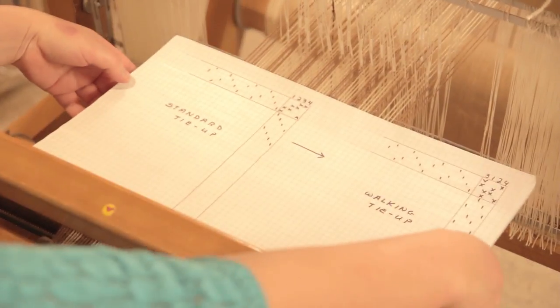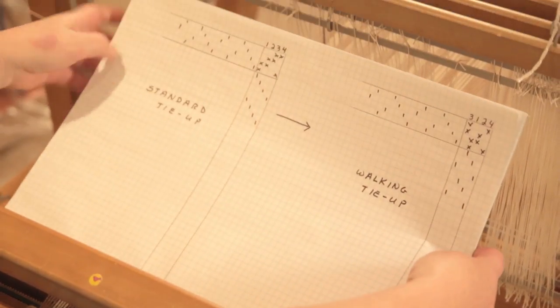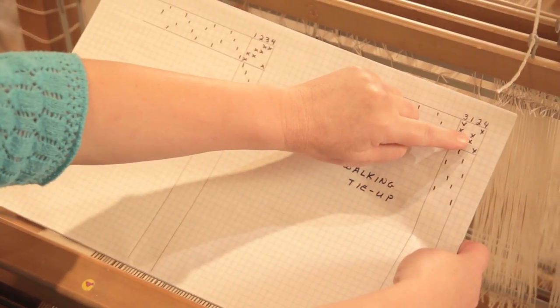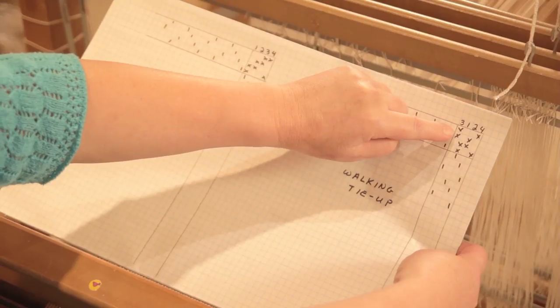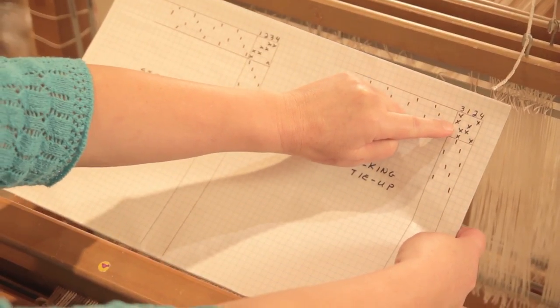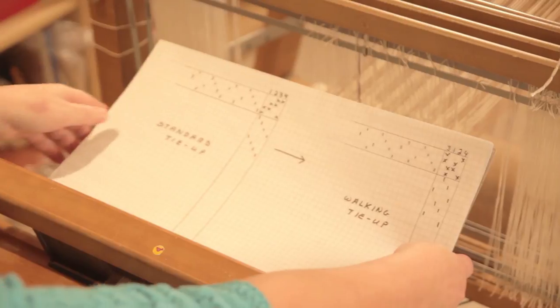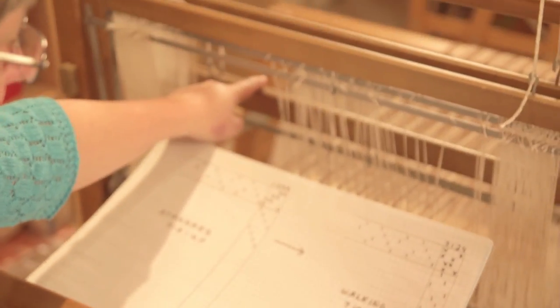So I have now been underneath the loom and I have re-tied my loom one, two, two, three, three, four, four, one. So if I step on the first pedal from my left side now, you will see shafts three and four going down.